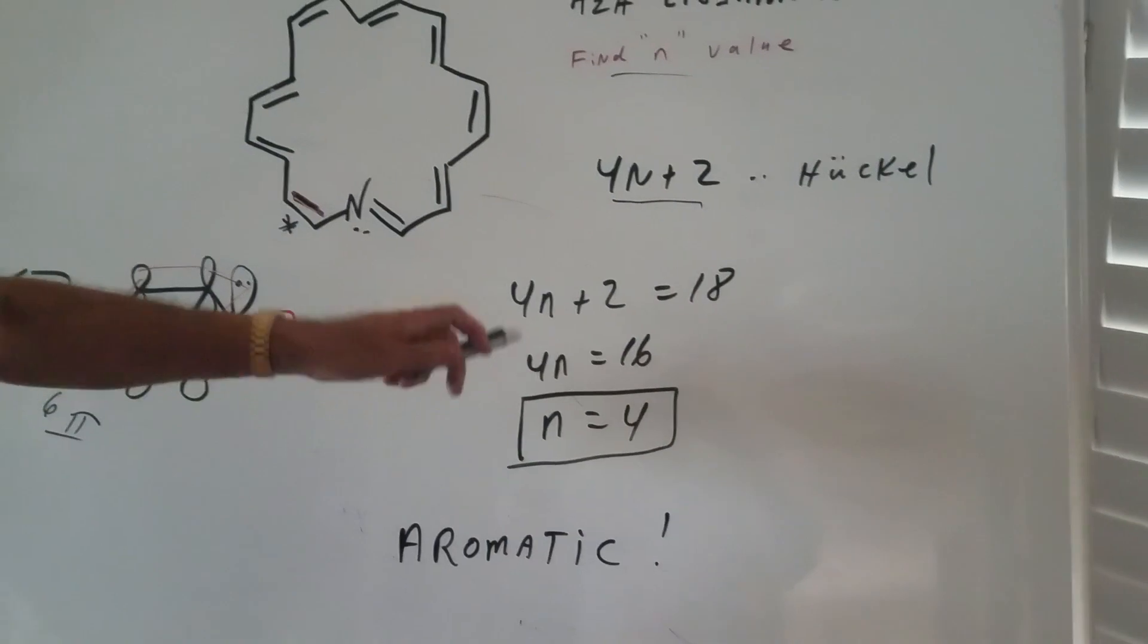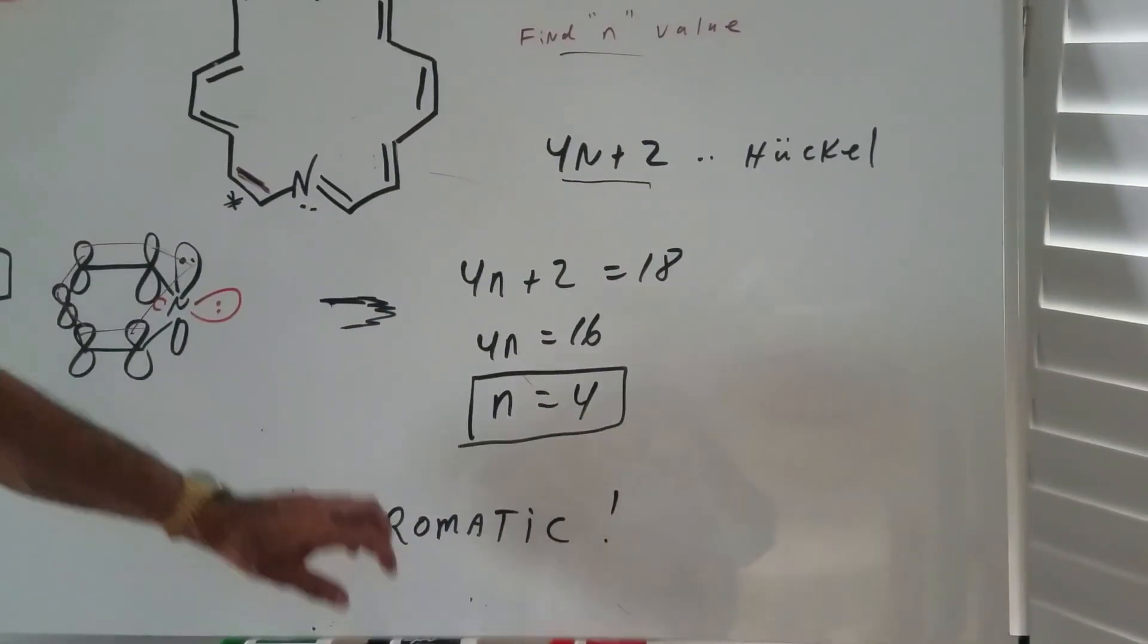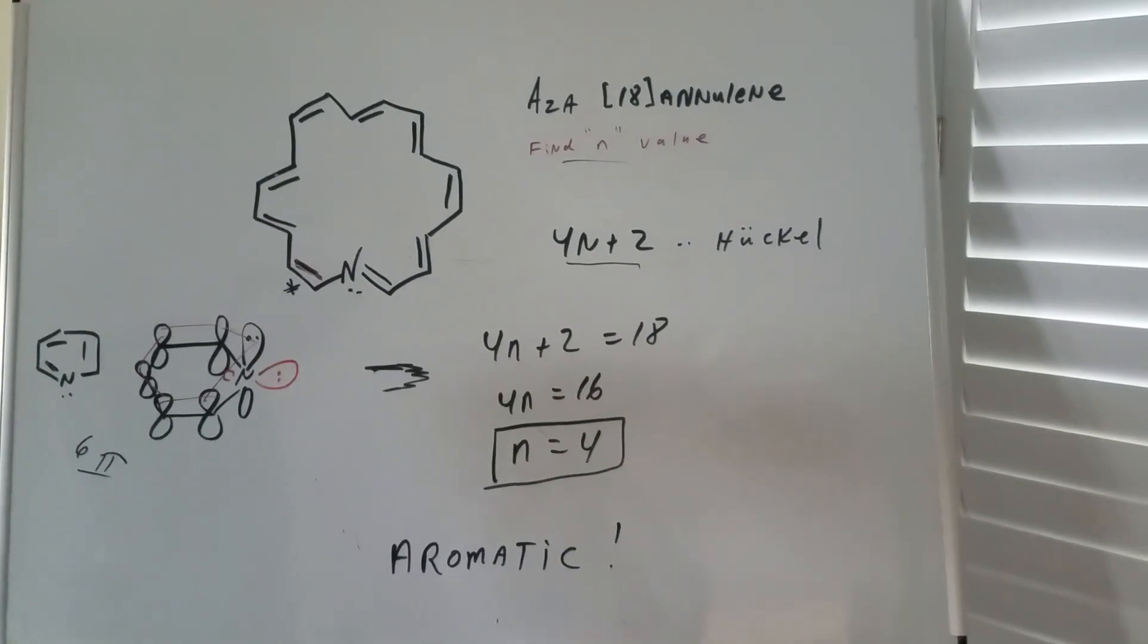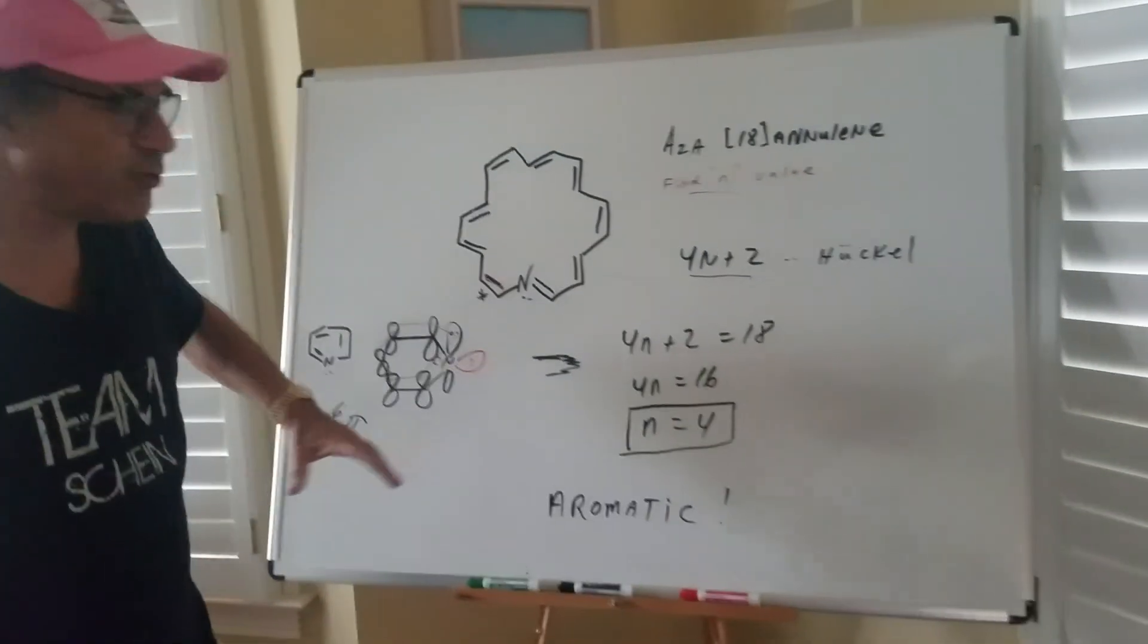Therefore, it's a Hückel number, 18, and we note that this annulene is aromatic. And I hope that gives you a really good understanding of how to do these problems.